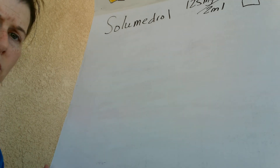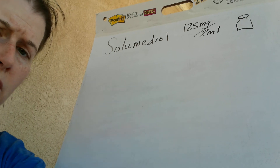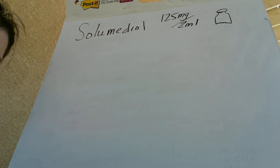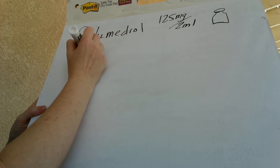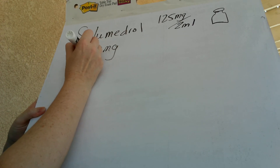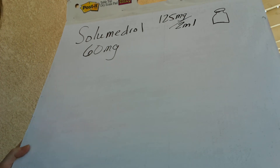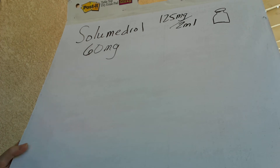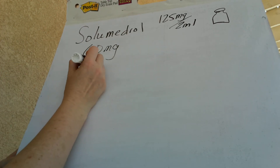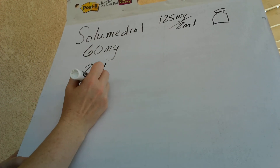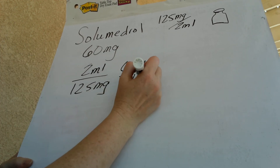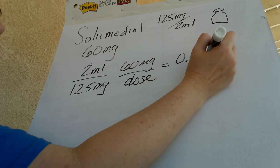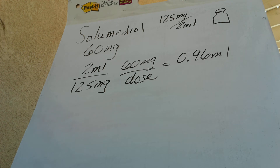The next drug is Solu-Medrol, a steroid we commonly give to COPD patients. Solu-Medrol comes 125 milligrams in 2 mLs, and a common dose is 60 mg. To draw up 60 mg, I start with 2 mLs per 125 mg and multiply by 60 mg per dose, giving me 0.96 mLs. I'll probably draw this up in a 1 mL syringe for best accuracy.